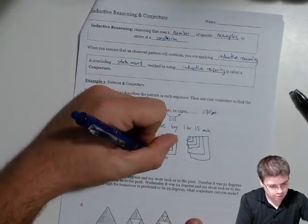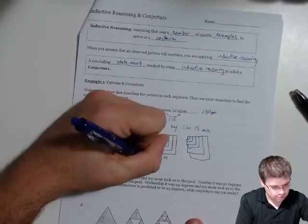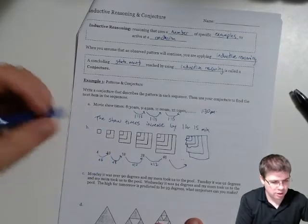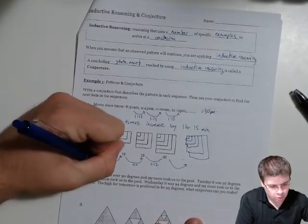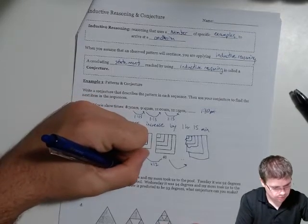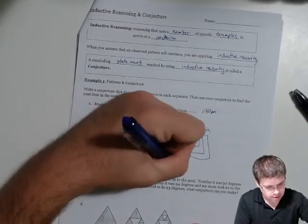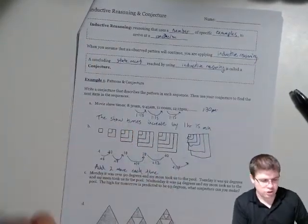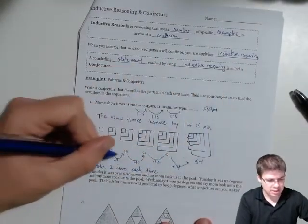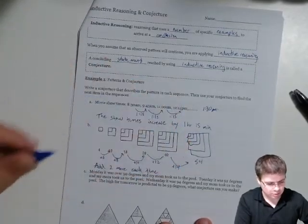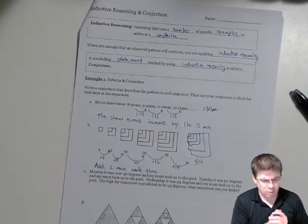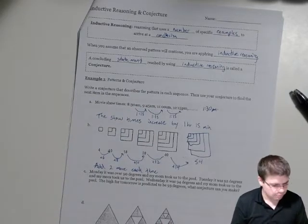And that pattern will continue. From here to here we added ten, from here to here we added twelve, and so then we can think about what are we going to end up adding here. So our pattern that we observe, our conjecture, is that we add two more each time. So in this case we're gonna add 14, and so our conjecture about what this pattern will end up is 40 plus 14 would put us at 54. So maybe I could say that better: we're not adding two each time, we're adding two more than we added before. So what we're adding increases by two each time.